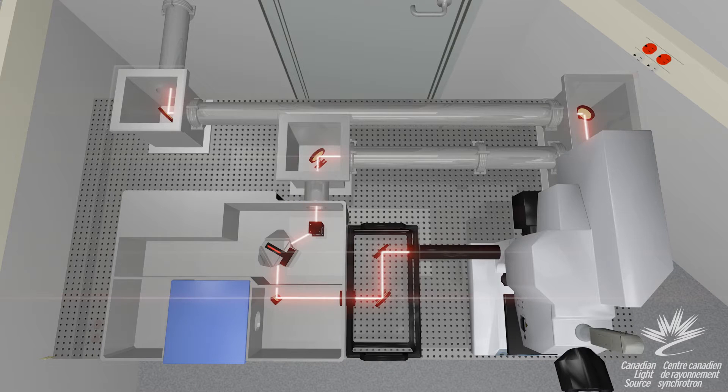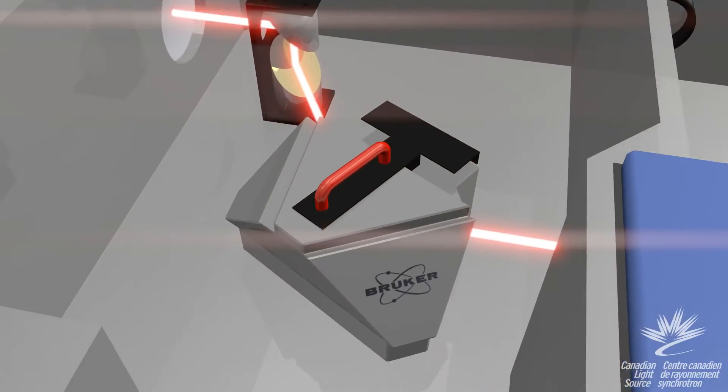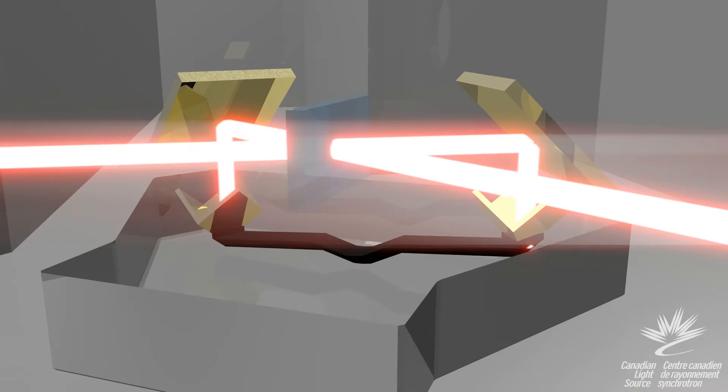Inside the spectrometer, the light passes through the compact Bruker rock-solid interferometer, which generates interfered light to illuminate the sample, which is necessary to perform Fourier transform infrared spectroscopy.